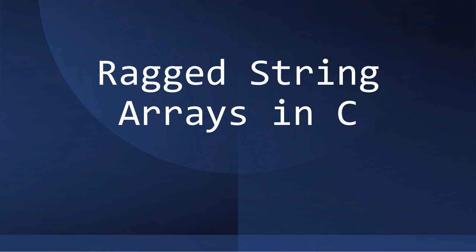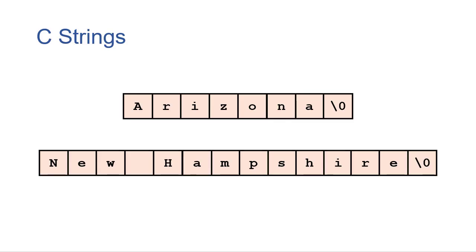So in this video, we're going to talk about how to store strings and arrays in C. And specifically, we'll talk about what's called a ragged string array. You'll sometimes also see this called a jagged string array. And when we actually see the picture of what it looks like, that will make sense where that name comes from. But to start out, let's review what C strings are.